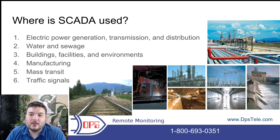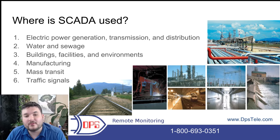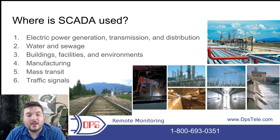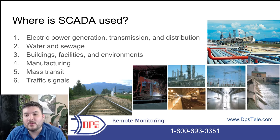Where is SCADA used? You'll see it in a lot of different industries. Power utilities is a big one, water and sewage, buildings, facilities, environments, manufacturing. If you have some kind of a factory, you're going to need a SCADA system to track everything and control things when they need to be changed. Mass transit and traffic signals — anytime you have trains or cars moving around, traffic lights changing, these are complicated systems and you need an ability to know what's happening and issue control commands when required.